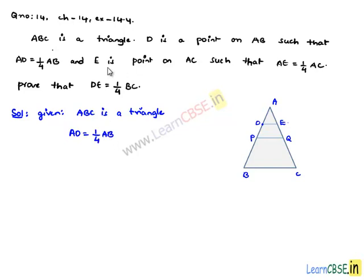And he also says that E is a point on AC such that AE is equal to one-fourth AC. So AE is a point considered such that AE is equal to one-fourth AC.